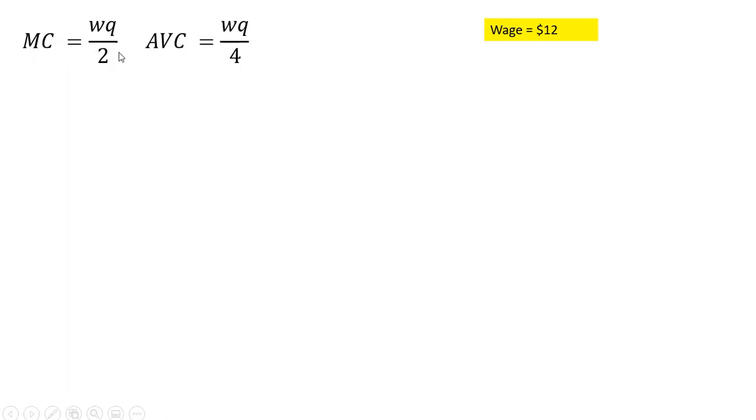So marginal cost, average variable cost equations. Now let's plug in a wage of $12. At a wage of $12, marginal cost is 6 times Q. At a wage of $12, average variable cost is 3Q. And let's go ahead and graph those.